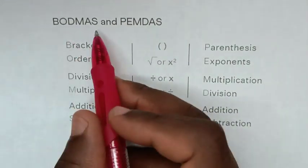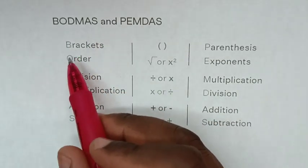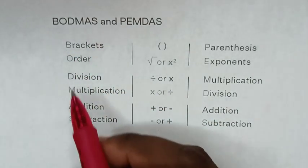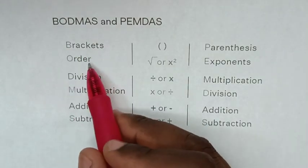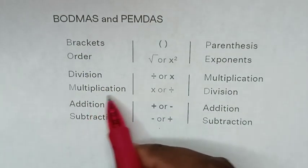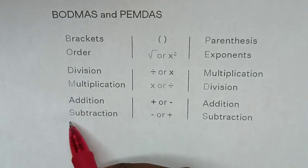From BODMAS, BODMAS is this: B is bracket, order, division, multiplication, addition, subtraction.